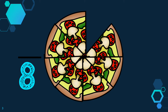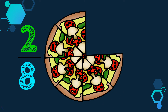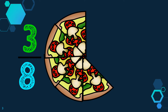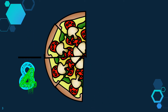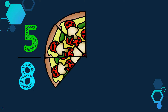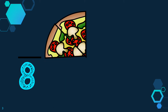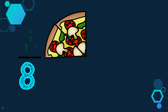Let's say I eat another slice of pizza. Now I have eaten 2 out of 8 slices of pizza, or 2 eighths. Let's say I'm still hungry and I eat another slice of pizza. Now I have eaten 3 out of 8 slices, or 3 eighths. If I keep eating pizza, I will have eaten 4 out of 8 slices, or 4 eighths. Now I have eaten 5 out of 8 slices, or 5 eighths. If I eat another slice of pizza, I have eaten 6 out of 8 slices of pizza, or 6 eighths.